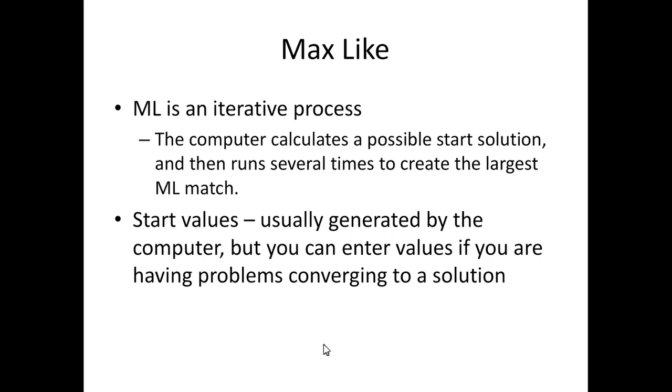So the way maximum likelihood works is it's an iterative process. So it's going to pick a start and run several times to create a distribution of possible estimates and pick the one that maximizes the likelihood of it being from the population, which therefore minimizes the likelihood of the fit function. Those start statistics are generally calculated by the computer, but you do have control over them if you want. Generally we just let the computer handle it.